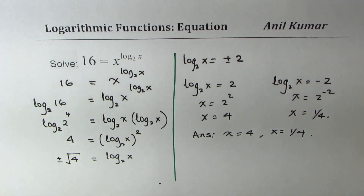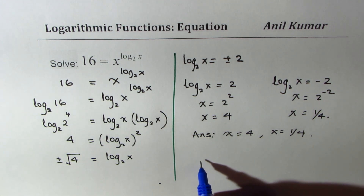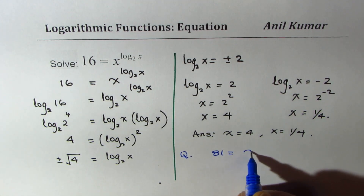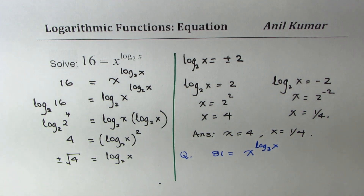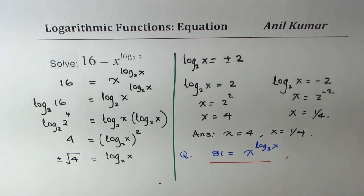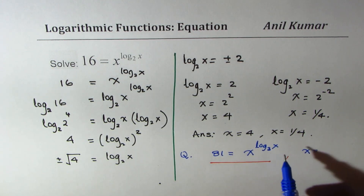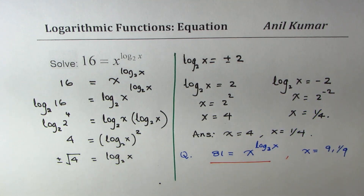So we have two solutions: x equals 4 and x equals 1 over 4. I hope the steps are absolutely clear. This is a very important question — I would like you to practice a similar one. So here is a practice question on the same lines: 81 equals x to the power of log base 3 of x. You may pause the video, solve this question, and then find the solution. Based on what we did, we expect x to be equal to 9 and 1 over 9, that is 3 to the power of plus or minus 2.